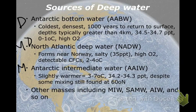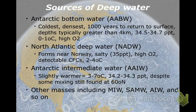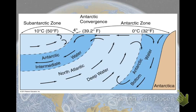Other water masses include Arctic Intermediate Water (AIW), which forms in specific areas and doesn't get much past the Arctic. There's also sub-Antarctic mode water. These are found in specific areas and are not as widespread. The reason we talk about the three major ones is that they're found in and influence all the ocean basins.